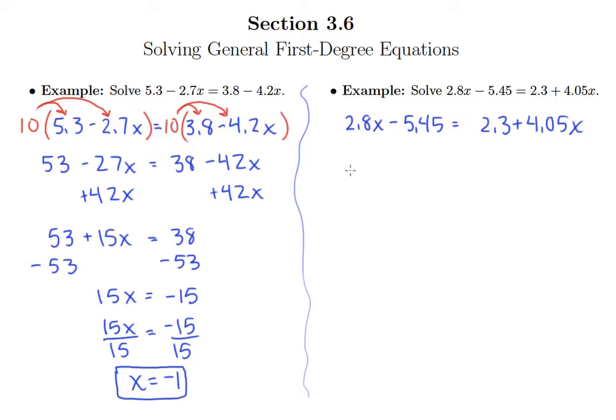Now, in the previous problem, we multiplied by 10 because the decimal points only needed to move over 1. However, you can see by 5.45, the decimal point would need to move 2 places here in order for it to be a whole number. So instead of multiplying by 10, to make this decimal point move 2, and then for that matter this decimal point to move 2, we would multiply by 100.